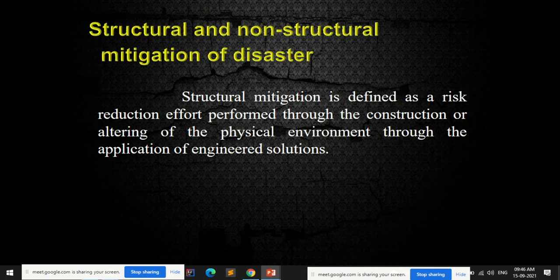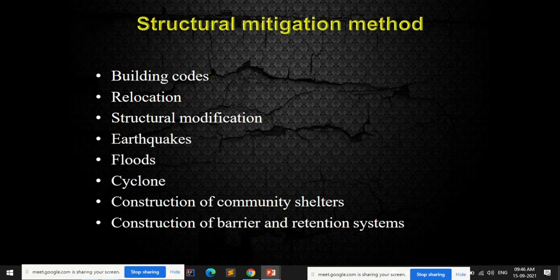Structural mitigation is defined as a risk reduction effort performed through construction or altering the physical environment through application of engineered solutions. This includes building codes for construction, relocation, structural modification, earthquake/flood/cyclone-resistant buildings, construction of community shelters, and construction of barriers and retention systems. All of these fall under structural mitigation methods.